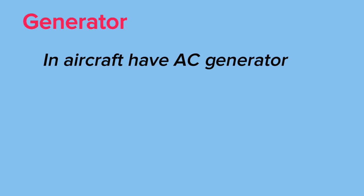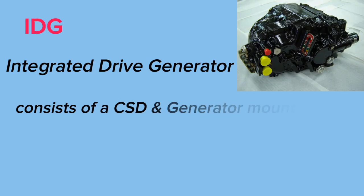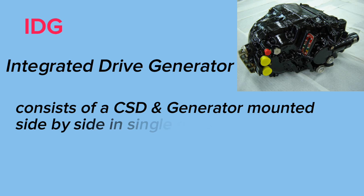Generator. An aircraft has an AC generator — three-phase, 115 volts, 400 hertz. IDG stands for Integrated Drive Generator, which consists of a CSD and a generator mounted side-by-side in a single housing.